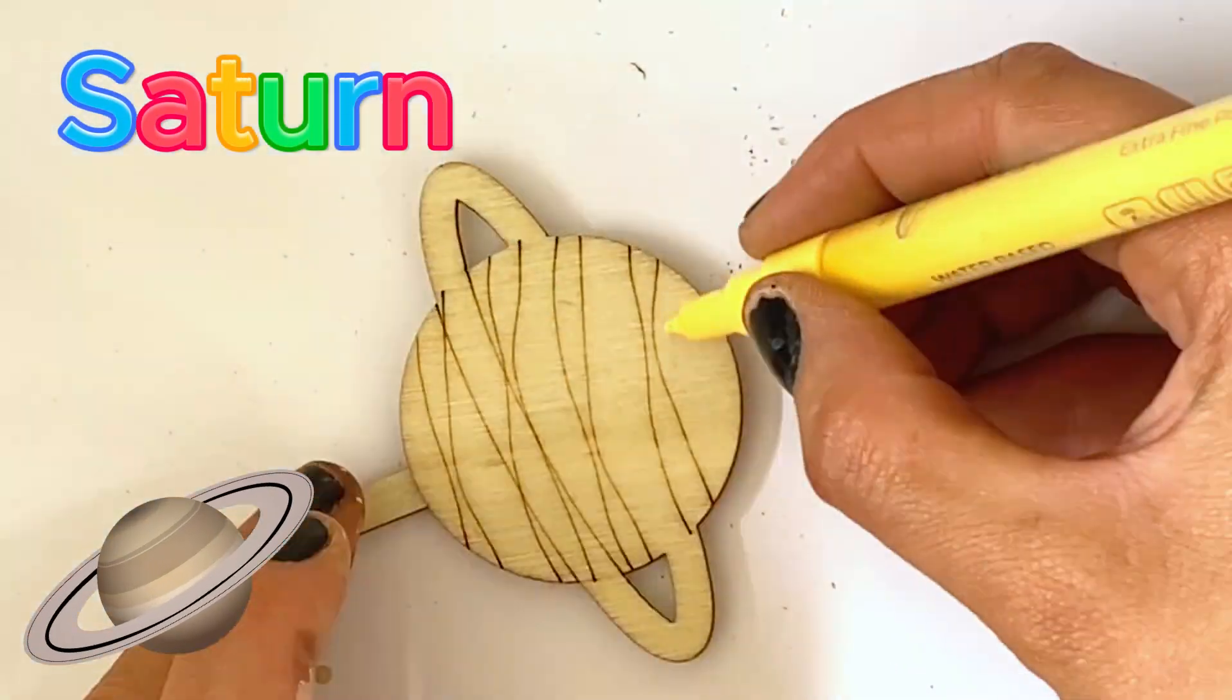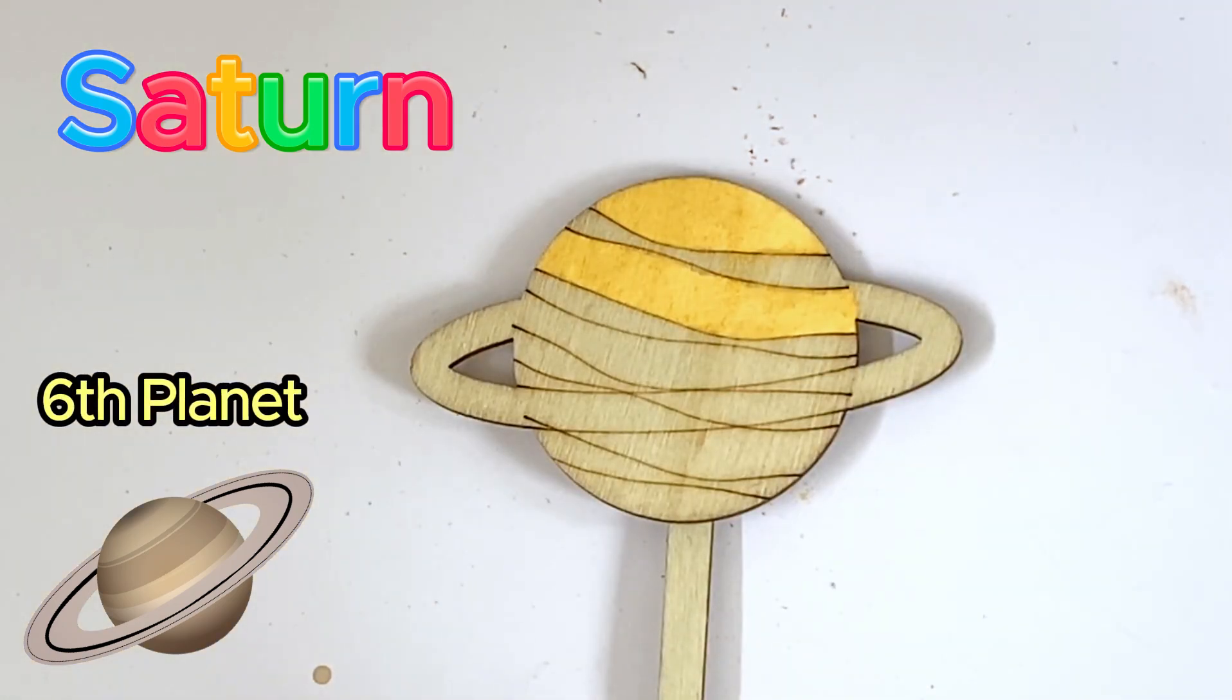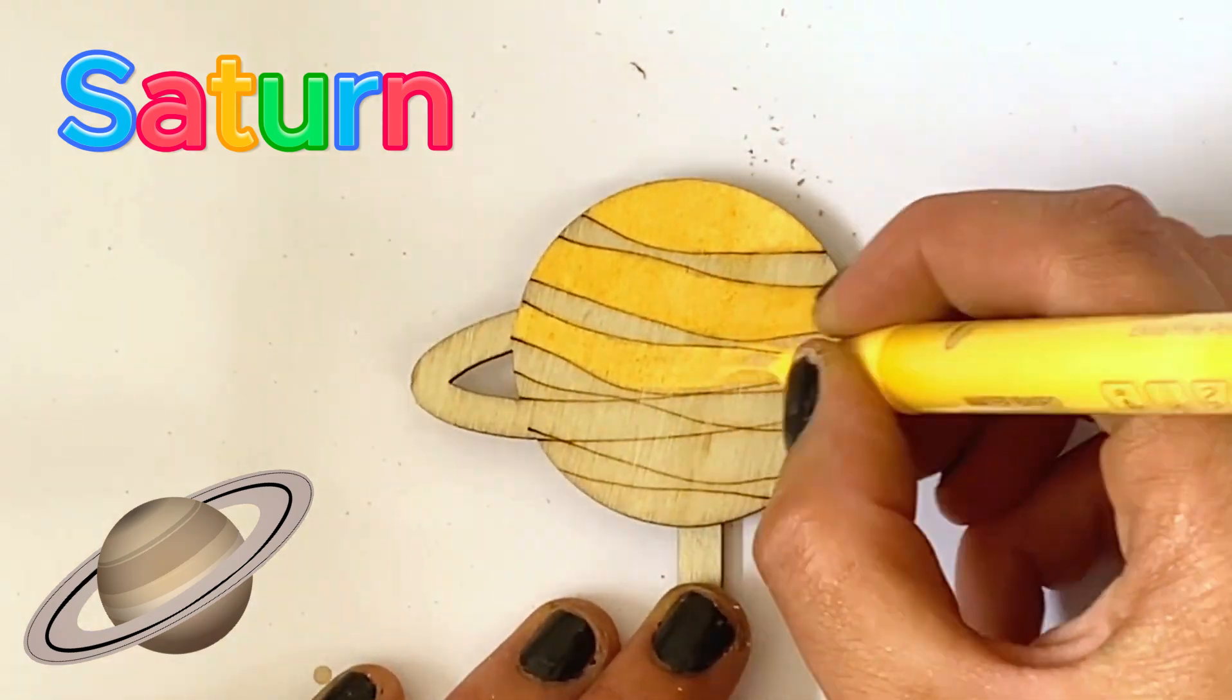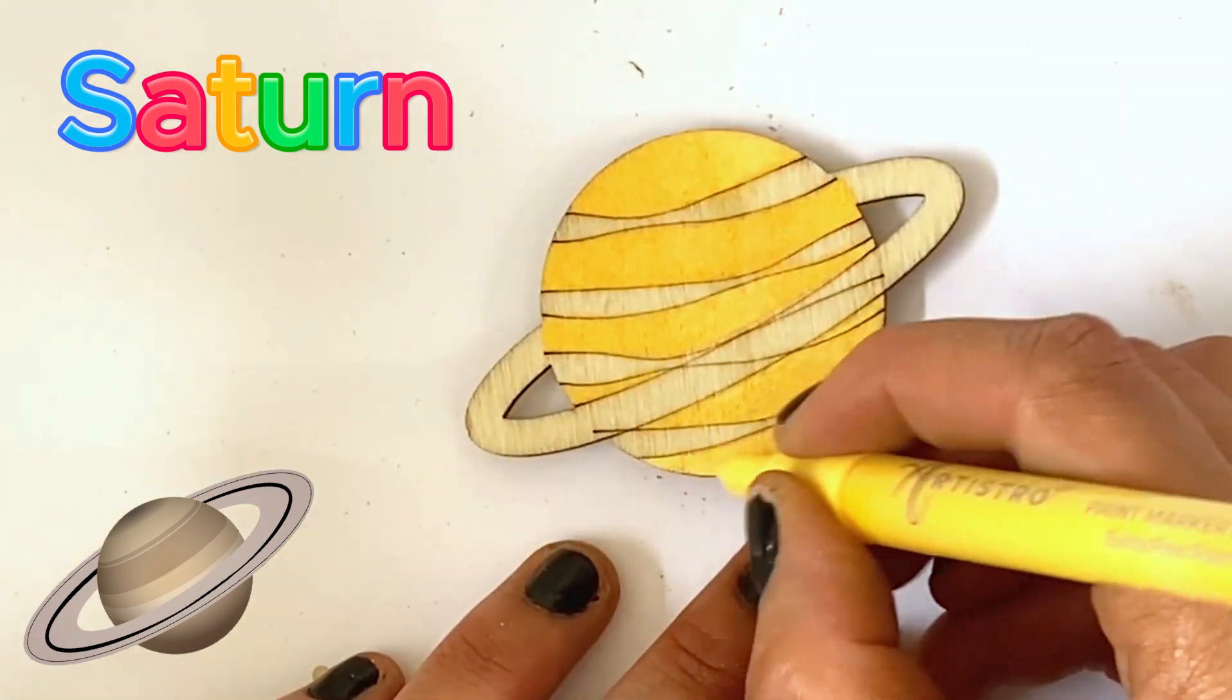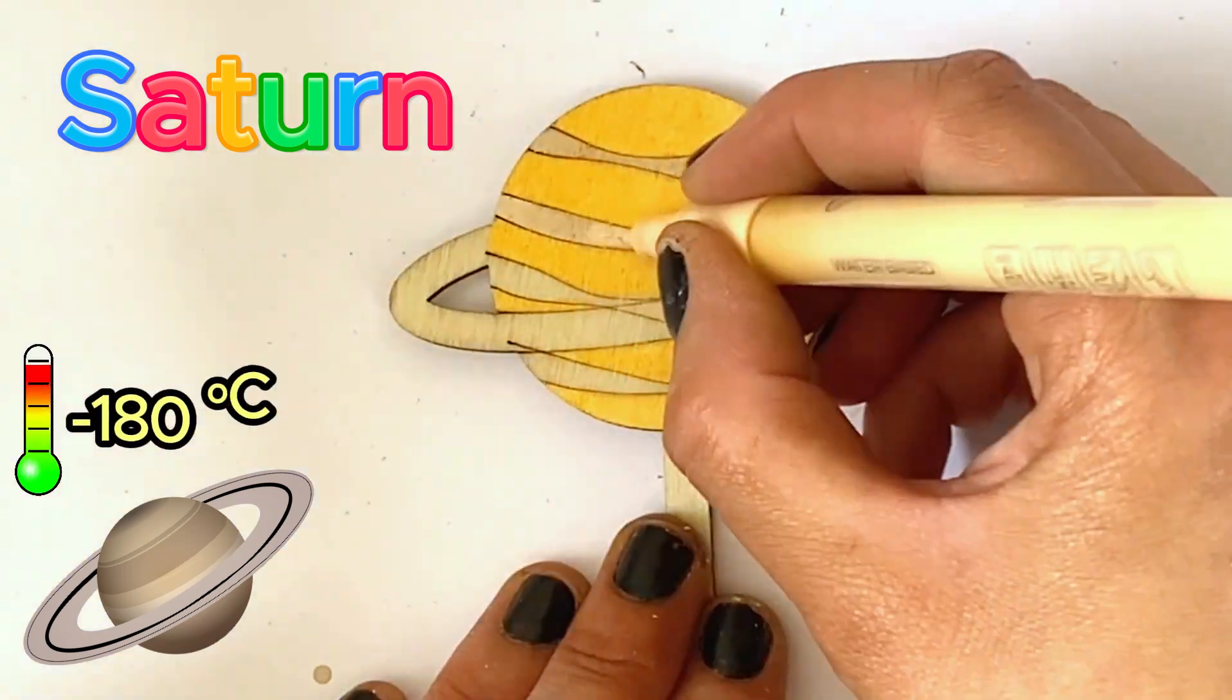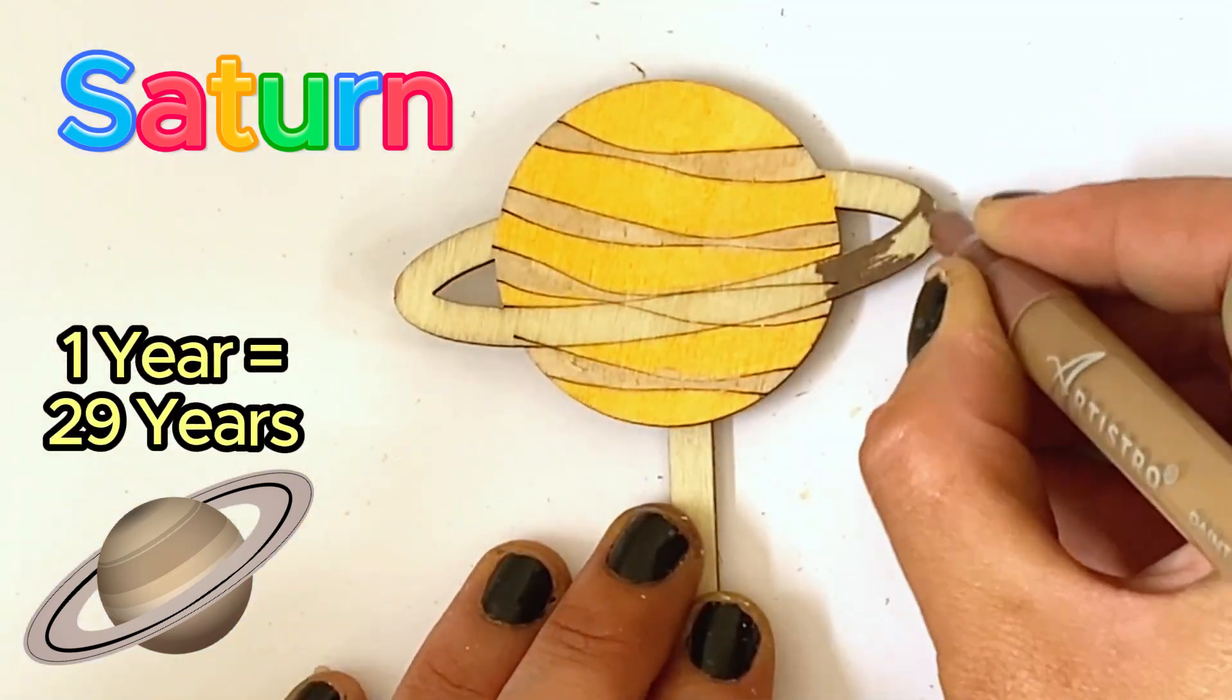The next planet we're going to paint is Saturn. And Saturn is another gas giant and is the sixth planet from the Sun. It is most known for its large rings. All of the gas giants have rings, but Saturn's is the largest and some other ring systems are hard to spot. Saturn has an average temperature of minus 180 Celsius. And it also takes Saturn over 29 years to orbit our Sun.